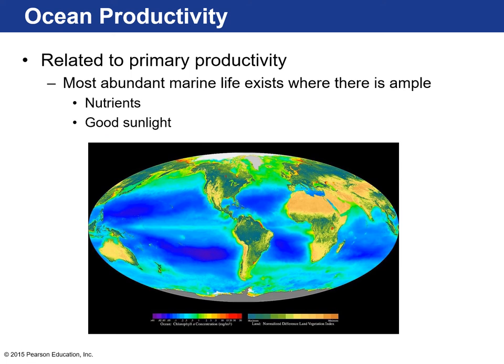Most abundant marine life exists where there are lots of nutrients and good sunlight. When those conditions occur, algal blooms appear — diatoms, coccolithophores — which are the food source for zooplankton, copepods, and krill. Then fish larvae start feeding on those, and when copepods and krill congregate, all other marine organisms come in to feed. It's a cascade of life from phytoplankton to zooplankton to small fish to larger marine organisms.